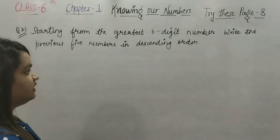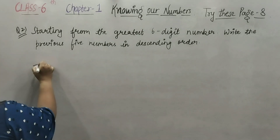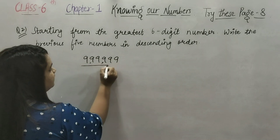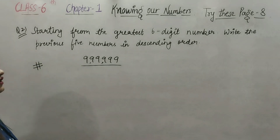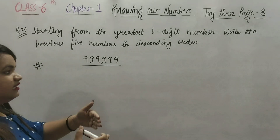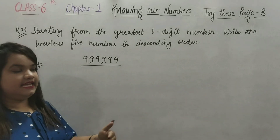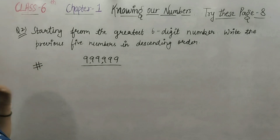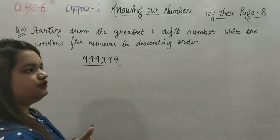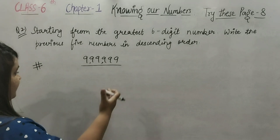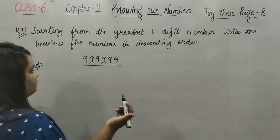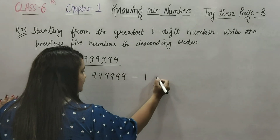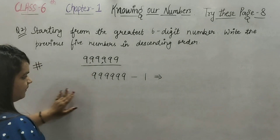Question 2 says: starting from the greatest 6-digit number, what is the greatest 6-digit number? It is 999999. Write the previous five numbers in descending order — descending order means from biggest to smallest. A very simple way to do this: take the greatest number and subtract 1, then 2, and so on.